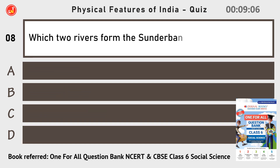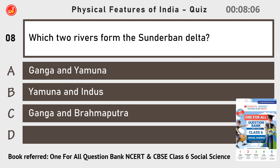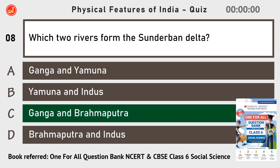Which two rivers form the Sundarban Delta? The Ganga and Brahmaputra.